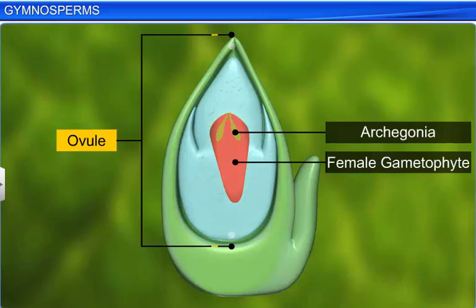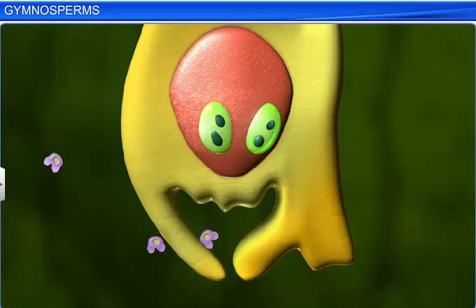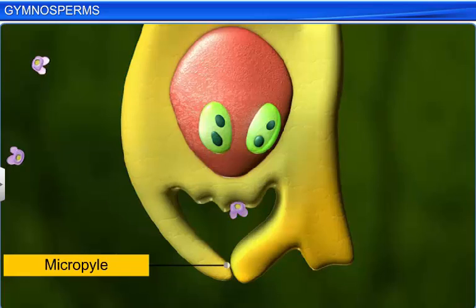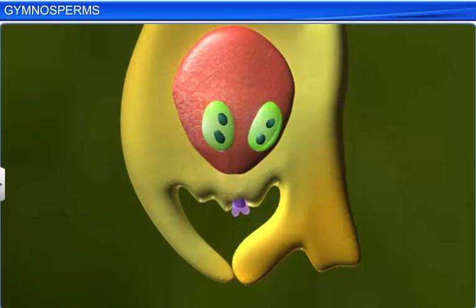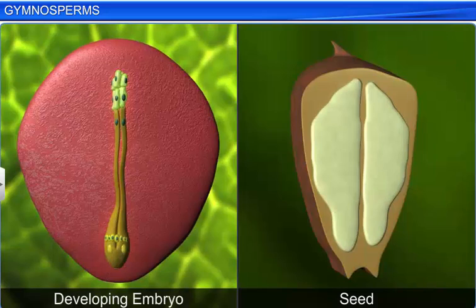The development of archegonia is followed by the fertilization process, during which pollen grains released from the microsporangium are carried by air currents and come in contact with the micropyle, an opening in the ovules. A pollen tube sprouts from the pollen grain and grows towards the archegonium, where it discharges the male gametes. These gametes fuse with the egg to form a zygote. Post-fertilization, the zygote develops into an embryo and the ovule into a seed.